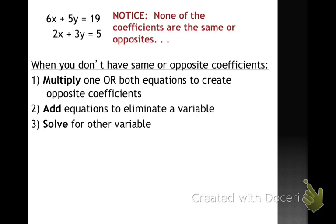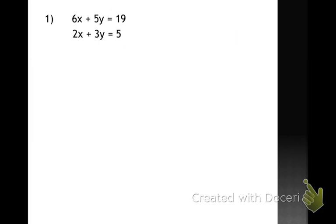Notice that none of the coefficients in this system are the same or opposite. And remember, our goal is to create opposites to get rid of one of our variables. So if I have something like this, that's no problem. I can multiply one or both of the equations to create opposites. And then I'm going to use the same process, add the equations, and solve for the other variable.